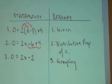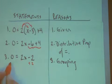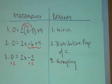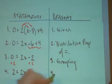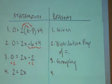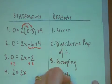Now mentally, I'm realizing this guy needs to move. So the actual fourth statement is that 2 is equal to 2x. What do you think the reason is? Yeah, the addition property of equality.